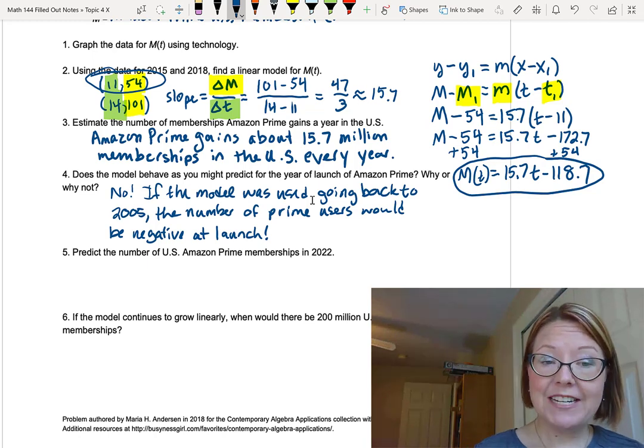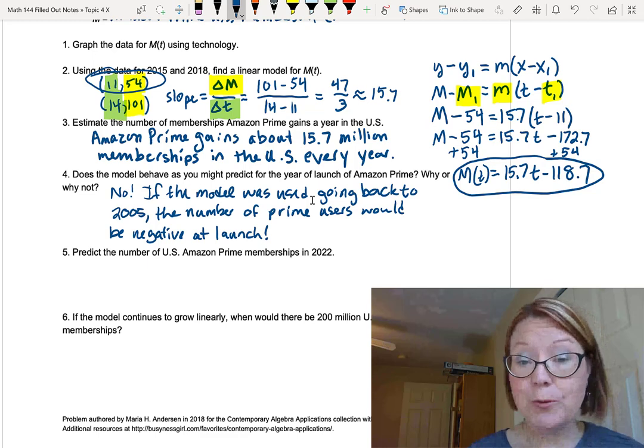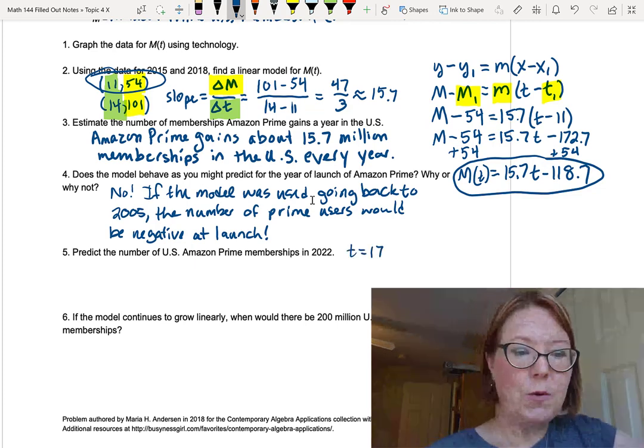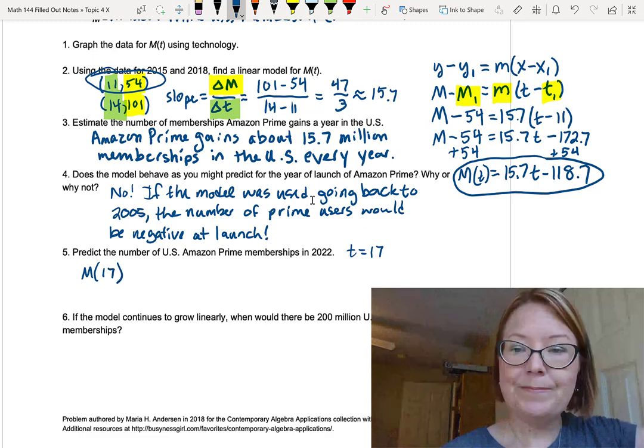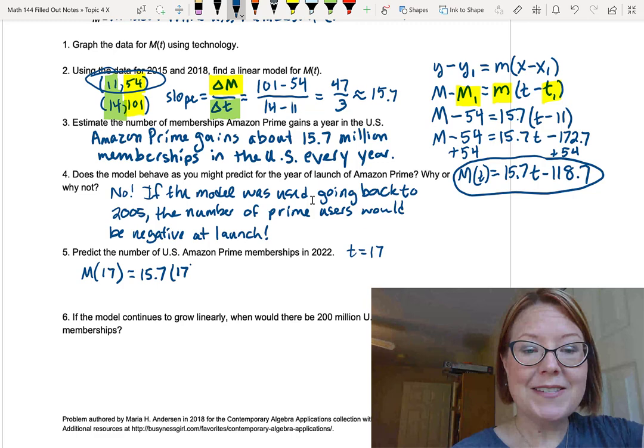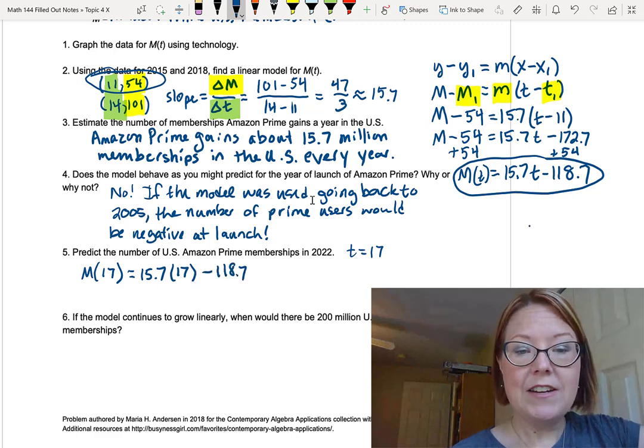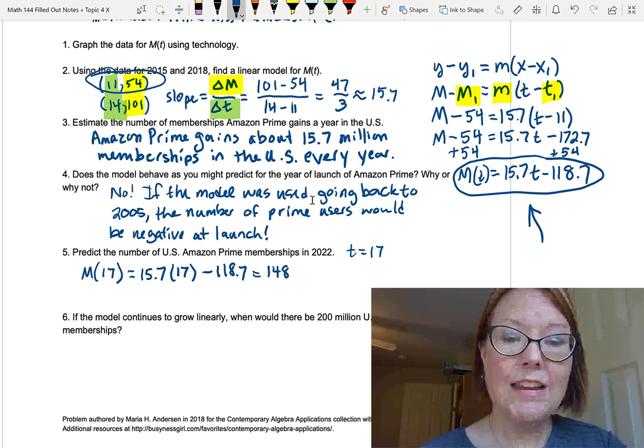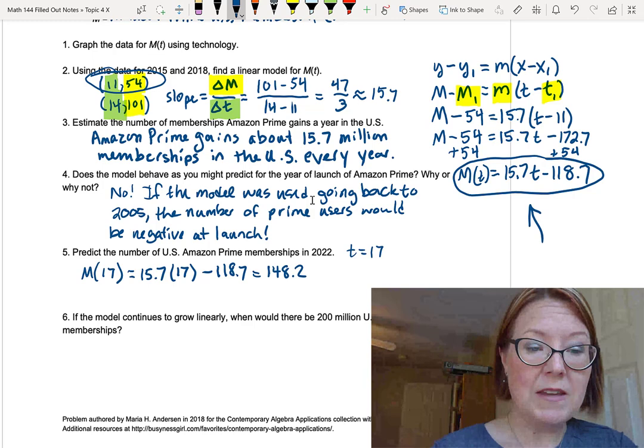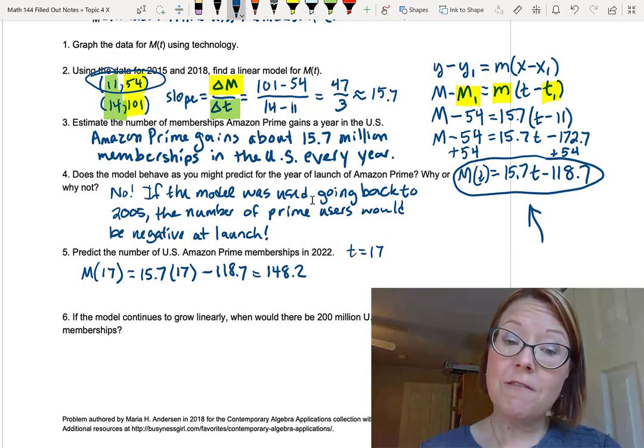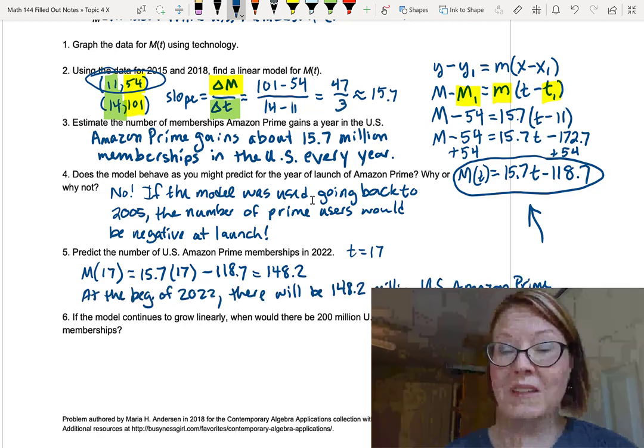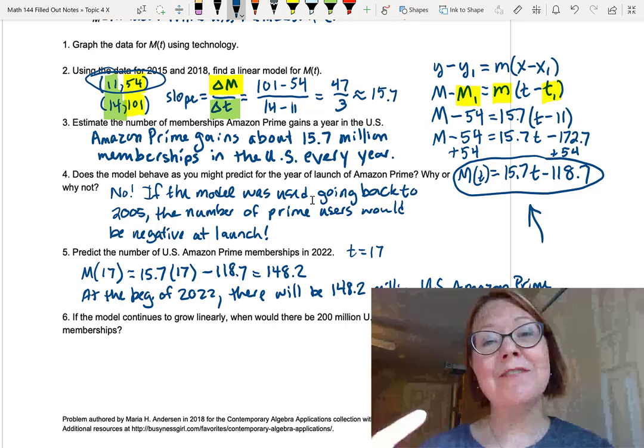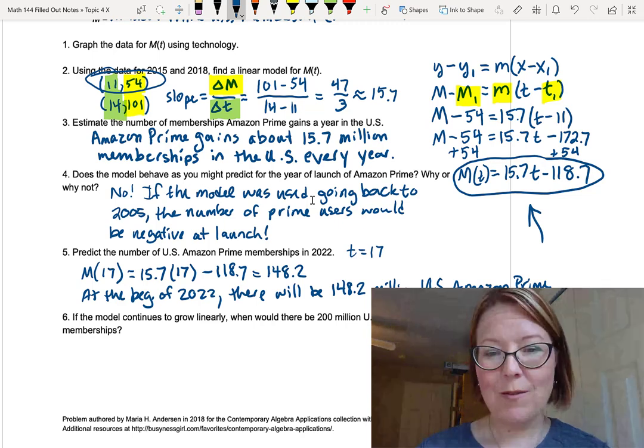Next, we're going to use our model to predict the number of US Amazon Prime memberships in 2022. Let's just assume we're looking for the number at the beginning of 22. So that would be time equals 17. So we want to find M of 17. That's going to be 15.7 times 17 minus 118.7. I'm going back up to this model I had in problem two. Let's do that calculation, which gives us 148.2. So we're going to predict that at the beginning of 2022, there are 148.2 million Prime members. It is super important that we say at the beginning of 2022. If we actually wanted the number at the end of 2022, or the fourth quarter data, we would need to do this for time equals 18 instead.